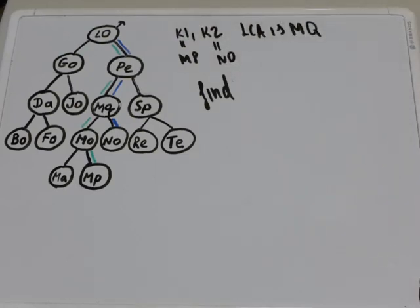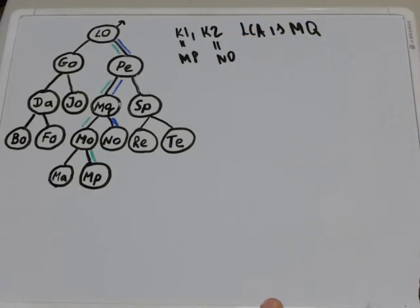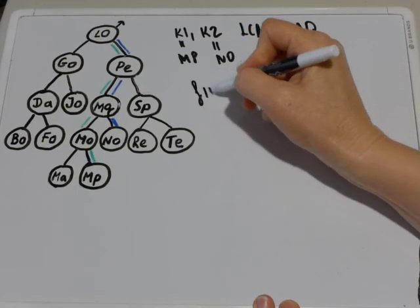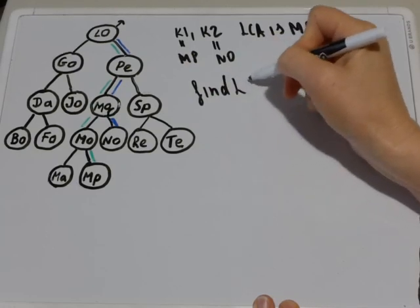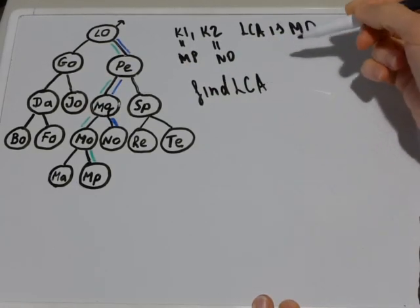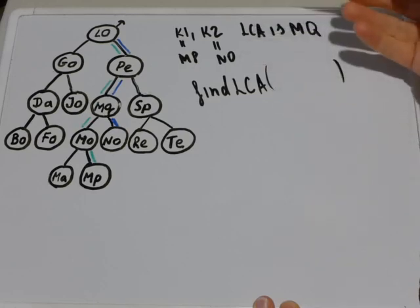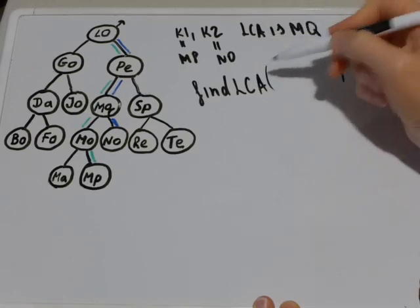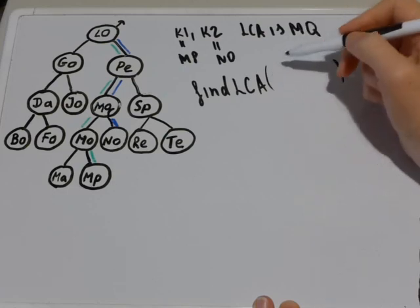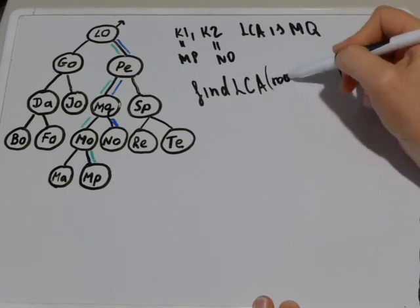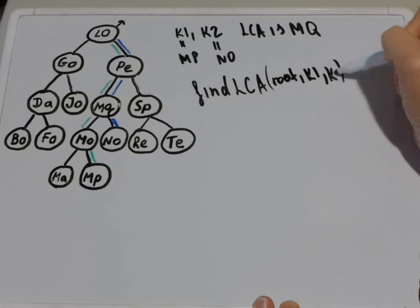So how would you actually implement it? You need to have two versions. The first is a public version find LCA as it is given to you in the assignment to which you pass key1, key2 and root. I don't remember the order of these parameters but I think it is root, and then you can pass key1 and key2.